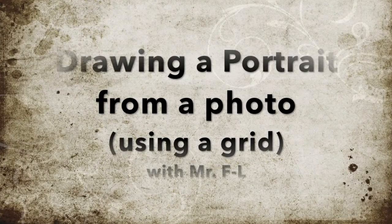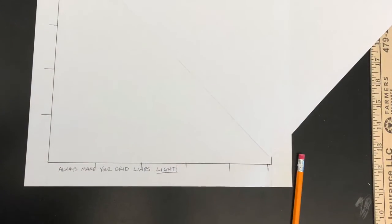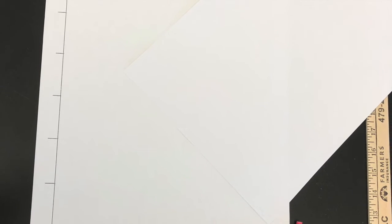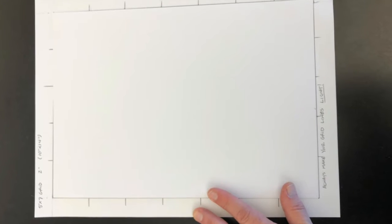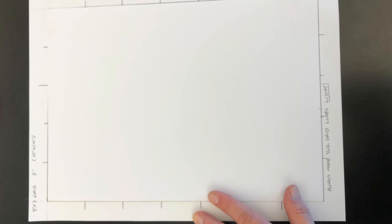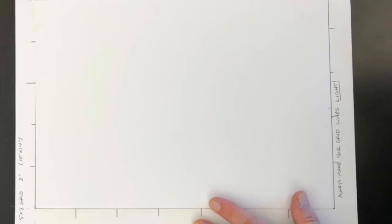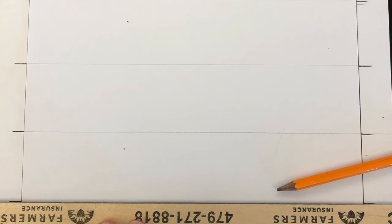Today we're going to draw a portrait using a photograph and a grid for scaling. I'm going to use a yardstick and a pre-made template to make a 2-inch grid on this paper. My predetermined size is going to be a 2-inch grid with 5 squares by 7 squares, meaning my paper is going to be 10 inches by 14 inches. This will make the drawing approximately actual size when we look at a portrait and the size of the head.